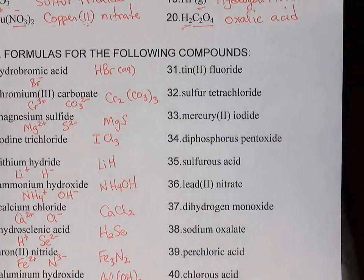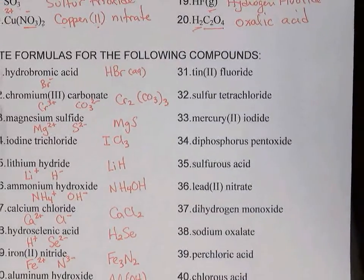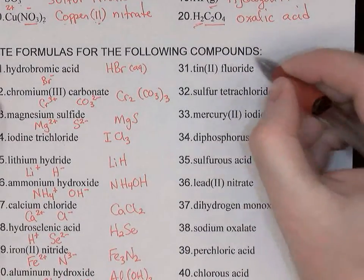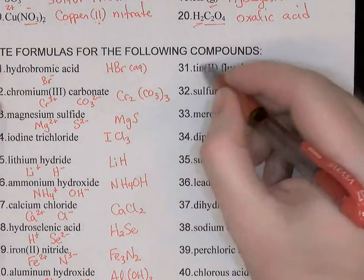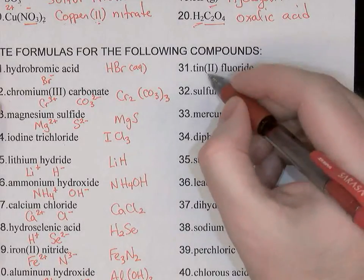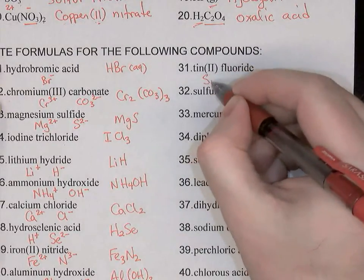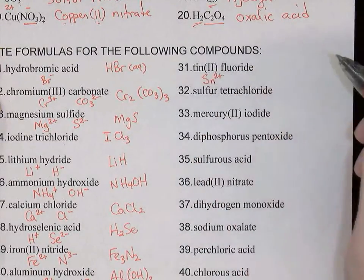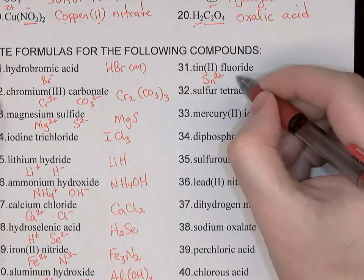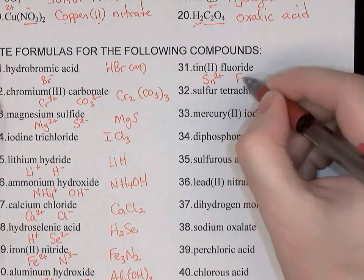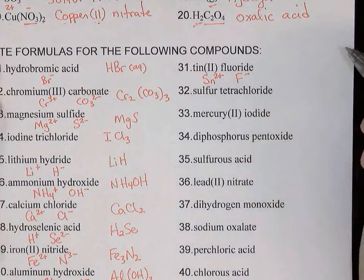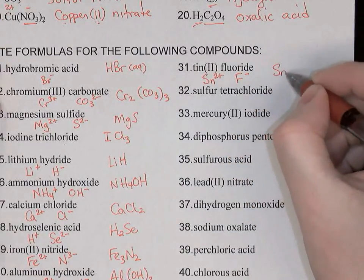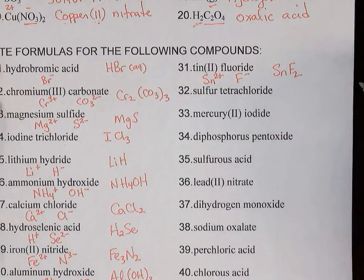Tin(II) fluoride: tin is a metal but it's a type 2 ion with a Roman numeral, so Sn²⁺. Fluoride is a halogen, so F-. The formula is SnF2.